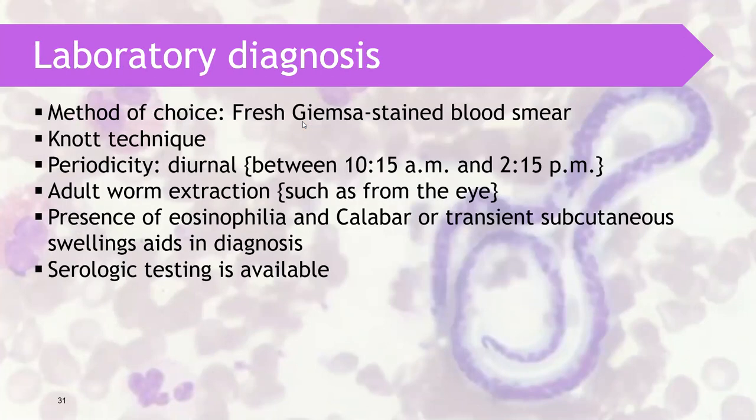The sample of choice is Giemsa-stained blood smear. Tissue biopsy cannot be used since it resides in the eye. The Knott technique is also possible. Periodicity should be considered — Loa loa exhibits diurnal periodicity, so blood collection should be done between 10:15 AM to 2:15 PM. The adult worm can be extracted from the eye. The presence of eosinophilia and Calabar swelling, a transient subcutaneous swelling, aids in diagnosis. Serological tests are also available.